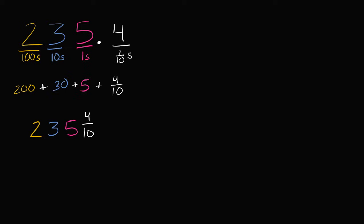Let's look at a few more examples. Let's say I were to write the number zero point seven six. So what would this be if I were to write it as a fraction? Let's think about the place value. We have our decimal point; to the left of the decimal point is the ones place, but I have a zero there — so this is zero ones. Then I have seven tenths — this is the tenths place. And then this place to the right of that, we're going to divide by ten again, so this is going to be the hundredths place.